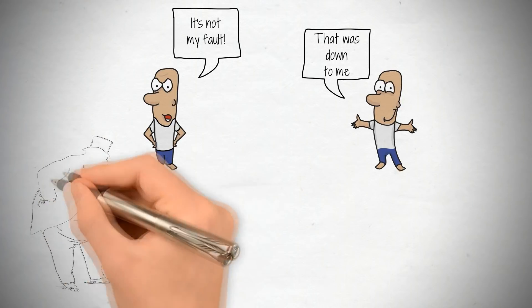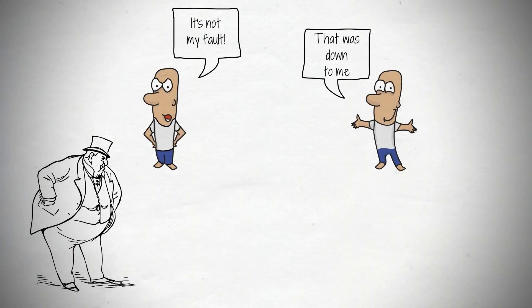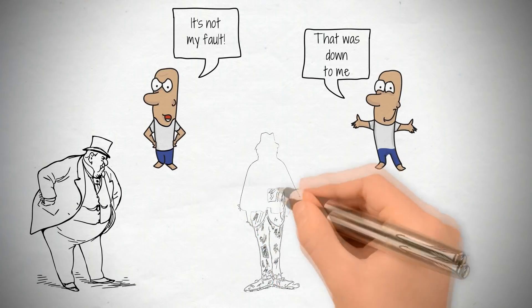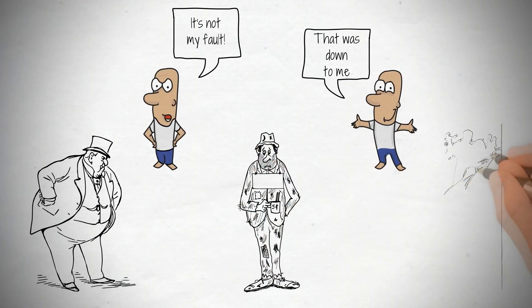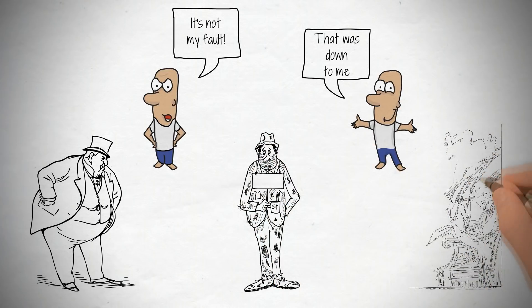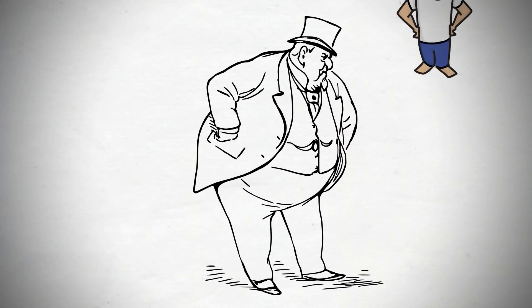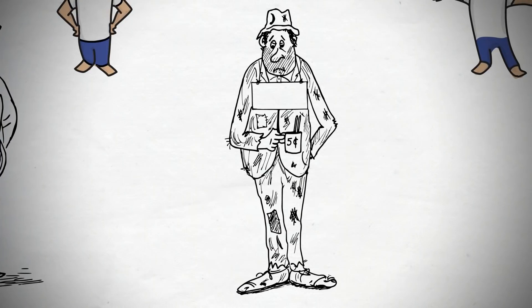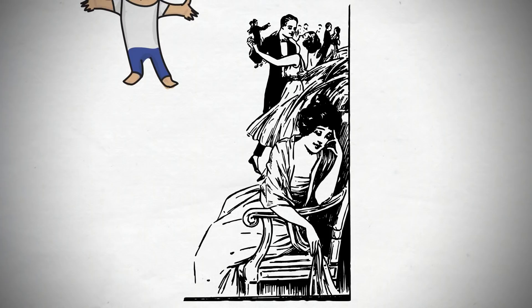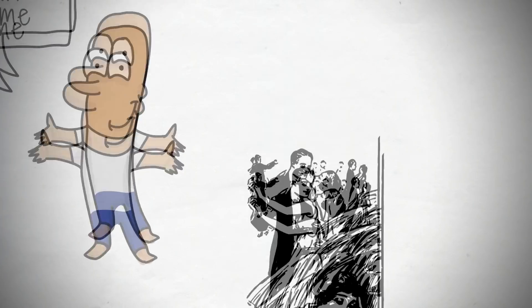Overweight people want to believe they just have an incurably slow metabolism. Poor people want to believe the system is rigged against them. Chronically single people want to believe there are no good partners out there. The problem with this is, the problems you've had in the past are largely the same ones you'll have in the future. So if a past failure was not your fault, that also means it's not within your power to fix it. You're screwed.